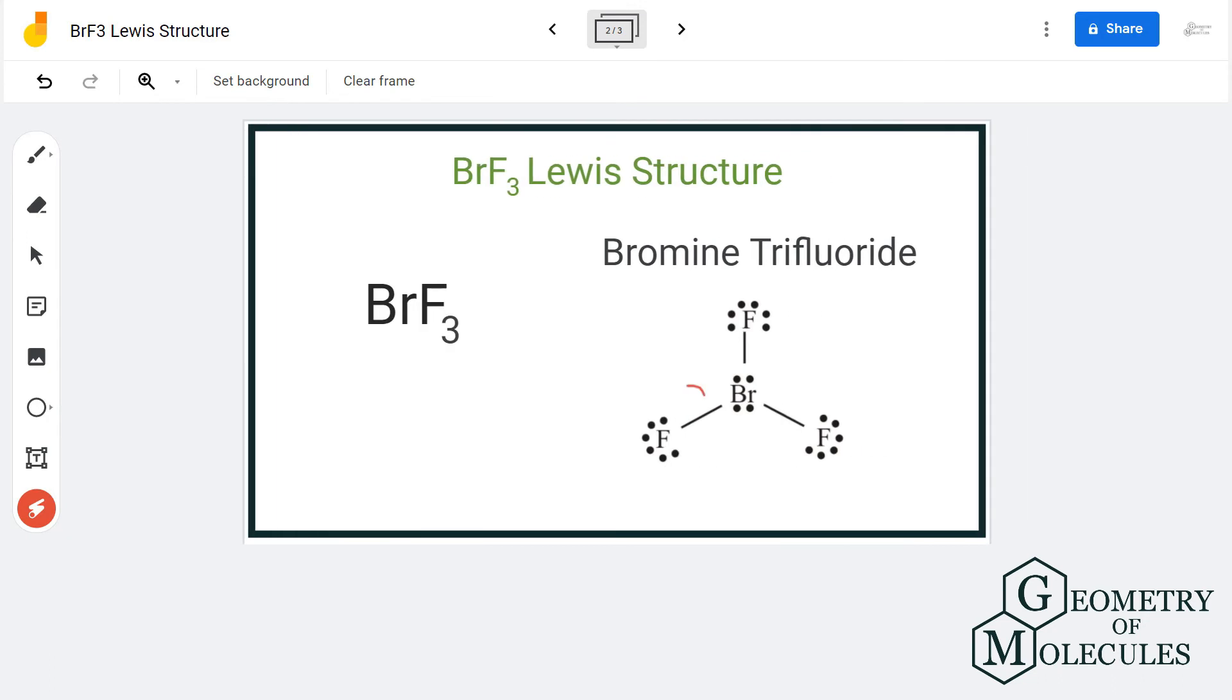Here each fluorine atom has eight valence electrons but bromine is now left with four valence electrons which are the non-bonding electrons. Hence the Lewis structure of BrF3 has three single bonds between bromine and fluorine and two non-bonding pair of electrons.